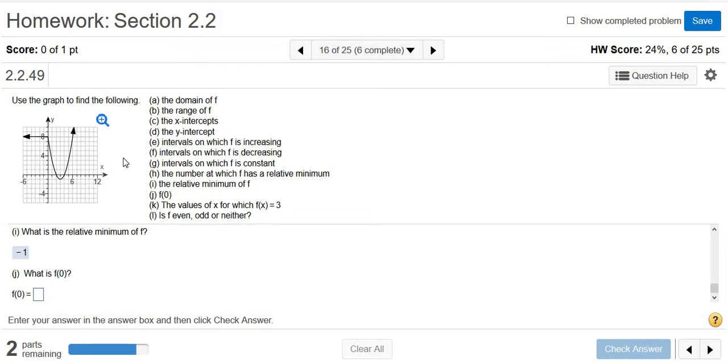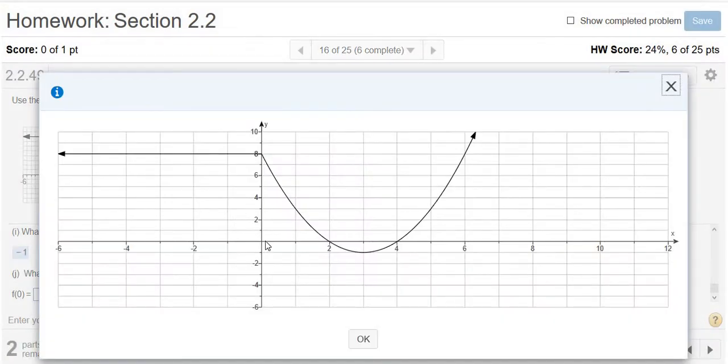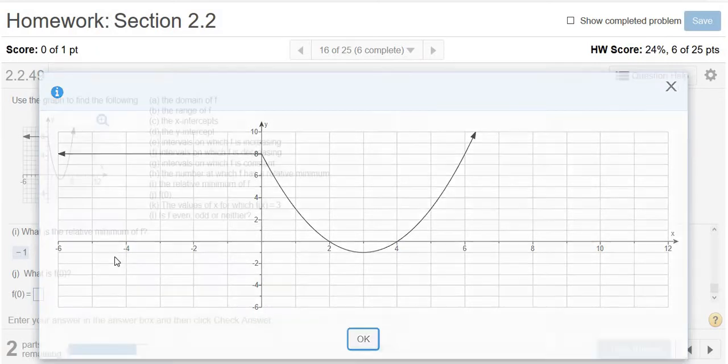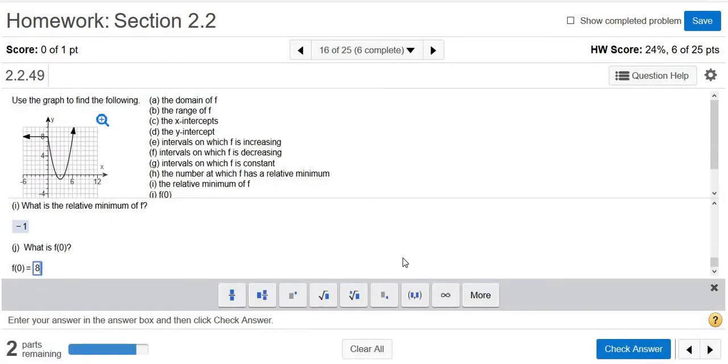It says, what is f of 0? f of 0 is the y-value when x is 0. So when x is 0, the y-value is 8. That actually happens to be the y-intercept. So f of 0 is the y-value when x is 0. The y-value when x is 0 is 8, so the answer is 8. There's a lot of questions in this problem.